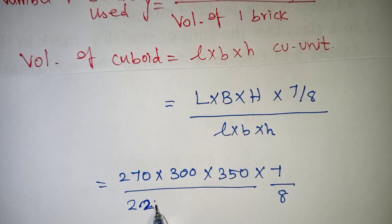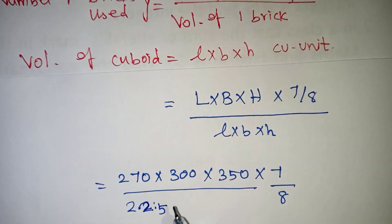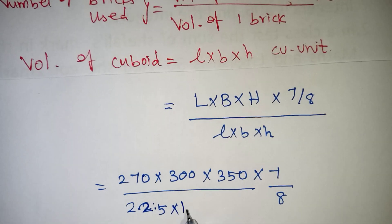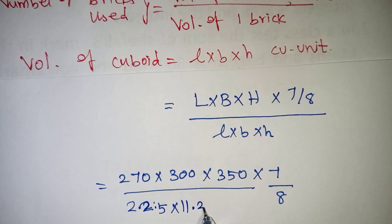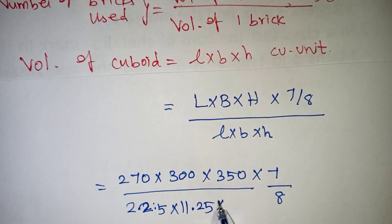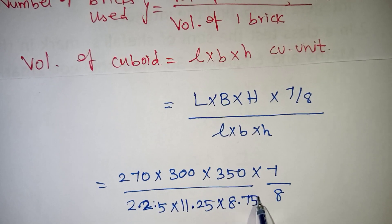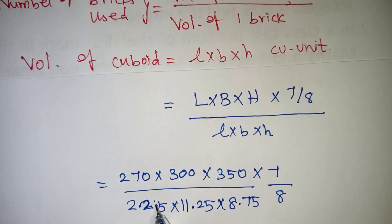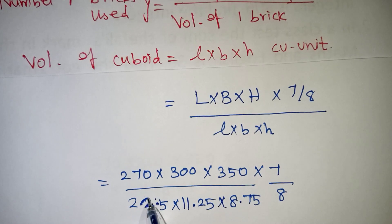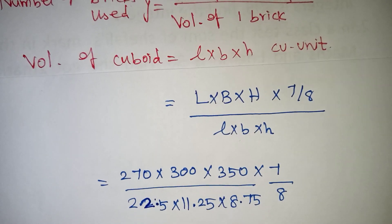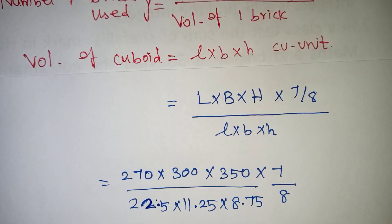The brick dimensions are 22.5, 11.25, and 8.75 cm. This gives the volume of the brick. The decimals will cancel out when we divide.